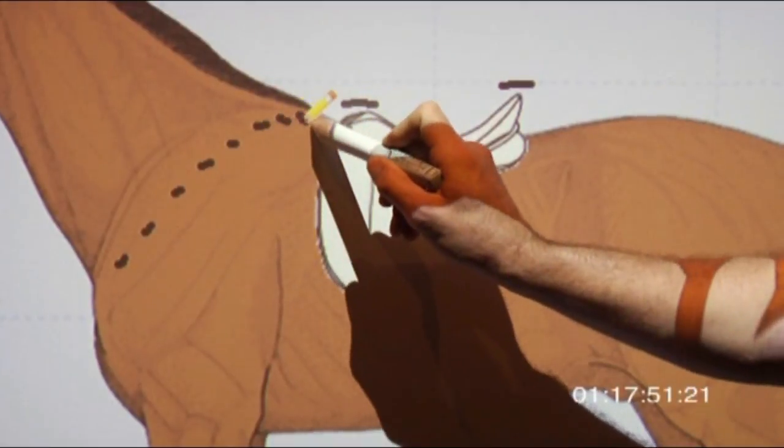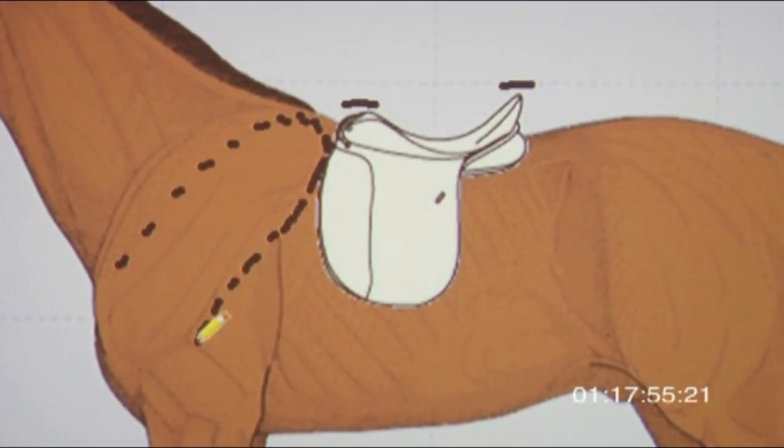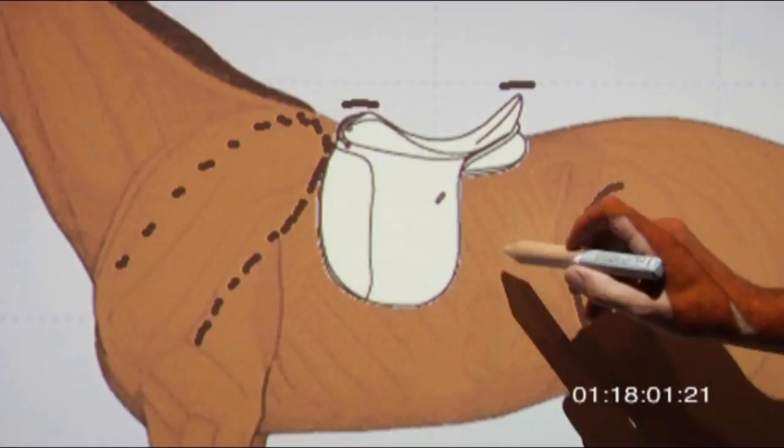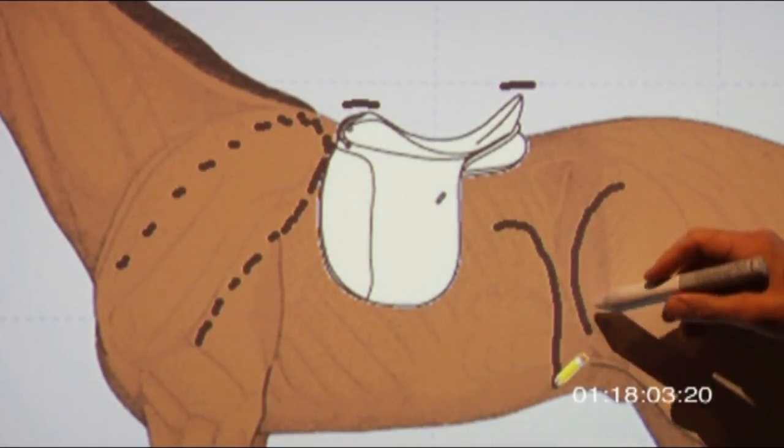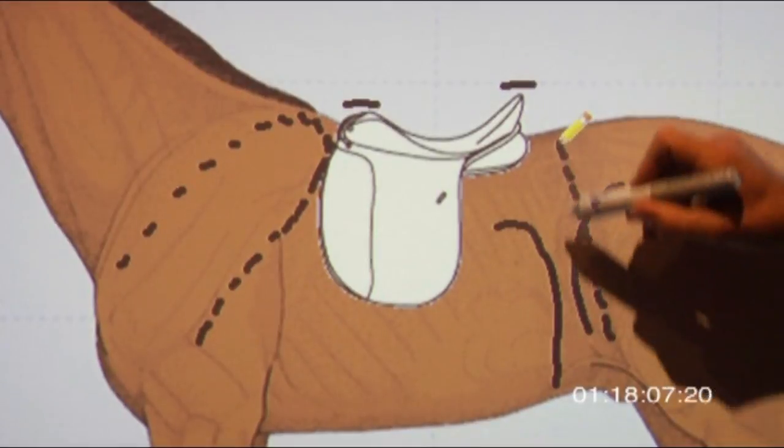is clearly behind the shoulder blade for maximum rotation and freedom of the shoulders. You can go to the horse and see where the hairline comes together. You can also feel the last rib and